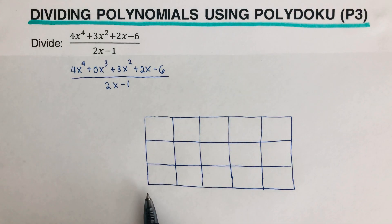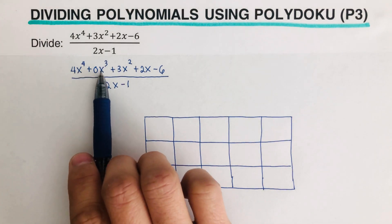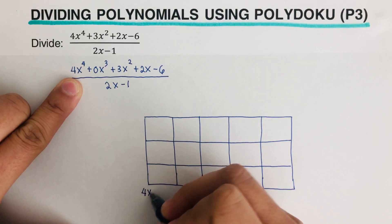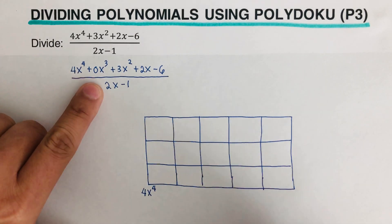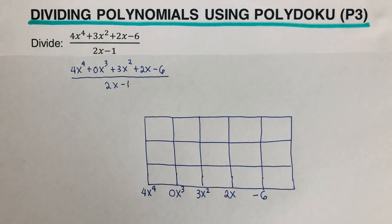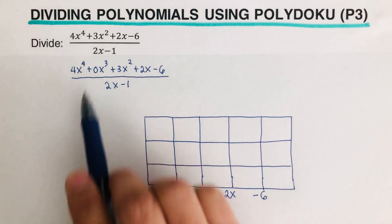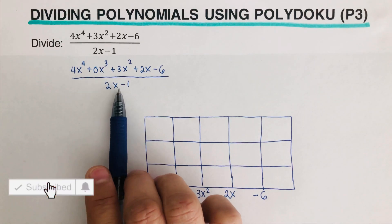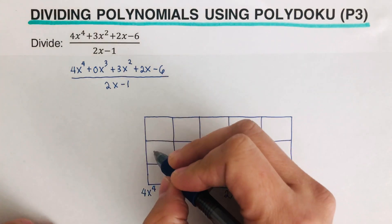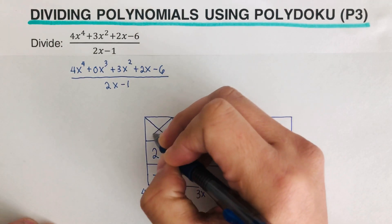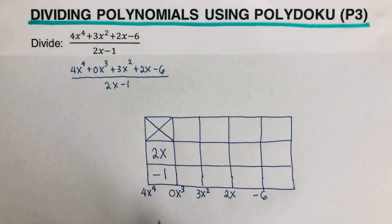Once I've created the six vertical lines, I will have three rows for this table. At the end of each vertical line, we write each of the terms from the numerator, starting with 4x to the fourth and writing the rest in order. Then we write the divisor — 2x goes here and negative 1 goes here, leaving one spot blank.